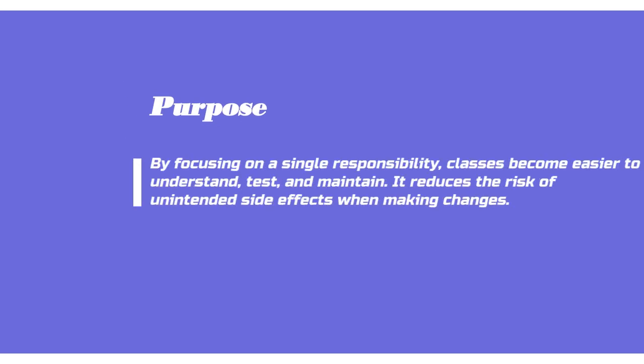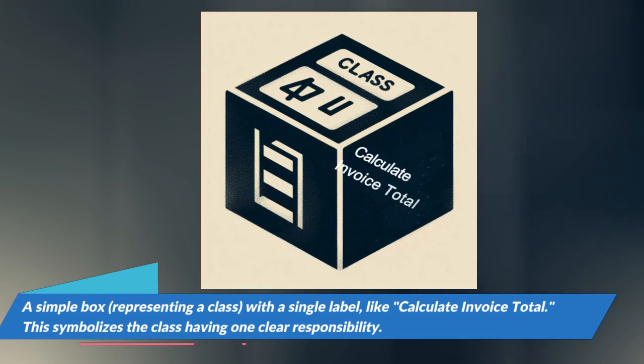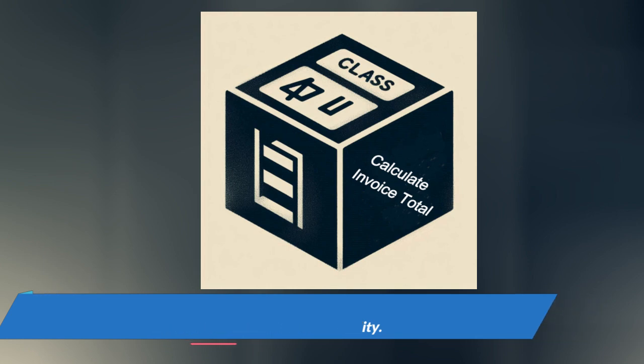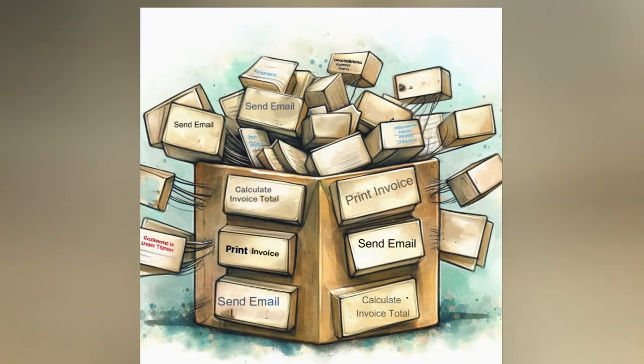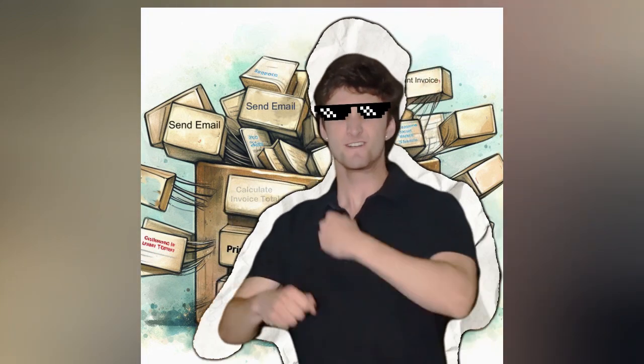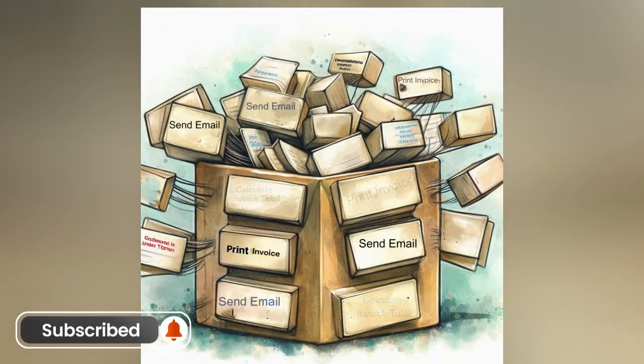Let's discuss this with an example. A simple box representing a class with a single label, like calculate invoice total. This symbolizes the class having one clear responsibility. The same box now has multiple labels attached, such as calculate invoice total, print invoice, and send email. The box appears cluttered or overburdened, representing a class with multiple responsibilities.